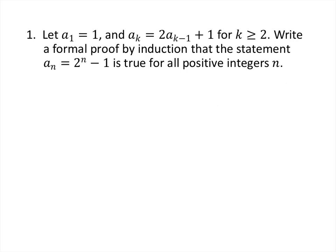Here's how we're going to structure our proofs by induction. The first thing we want to do is give a name to the statement that we're trying to prove. So in this case, we say: let P of n represent the statement 'a sub n equals 2 to the n minus 1.'